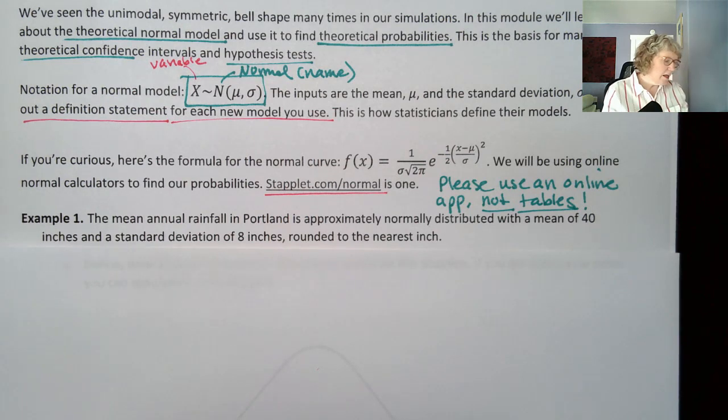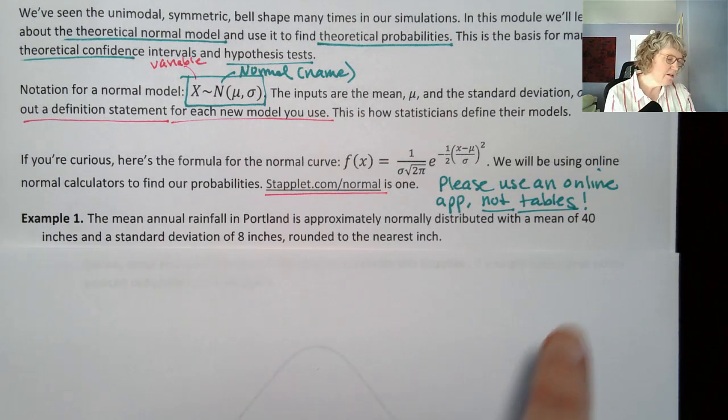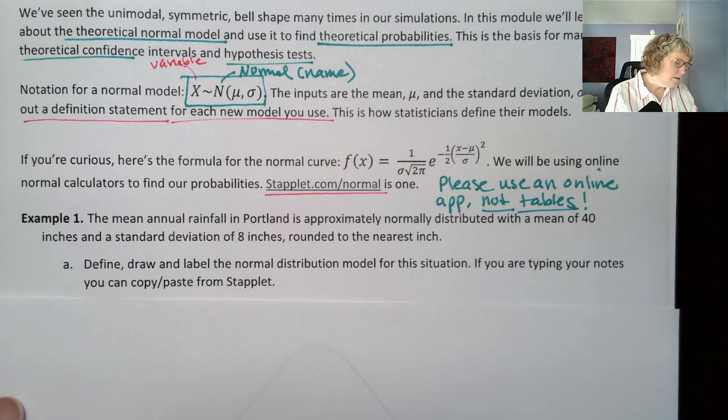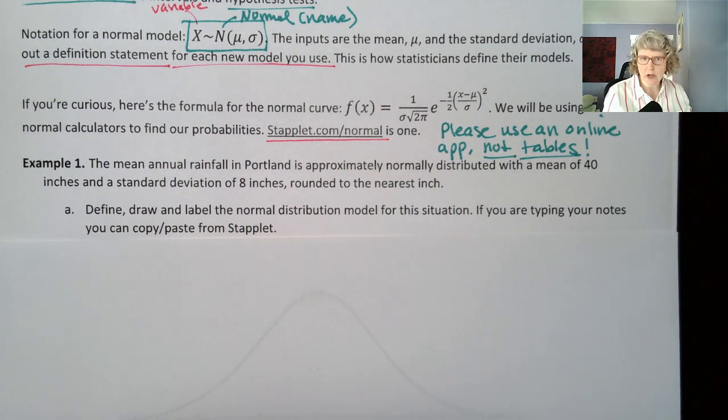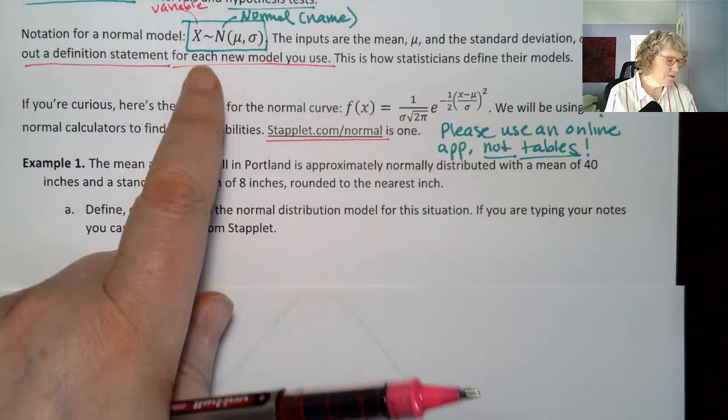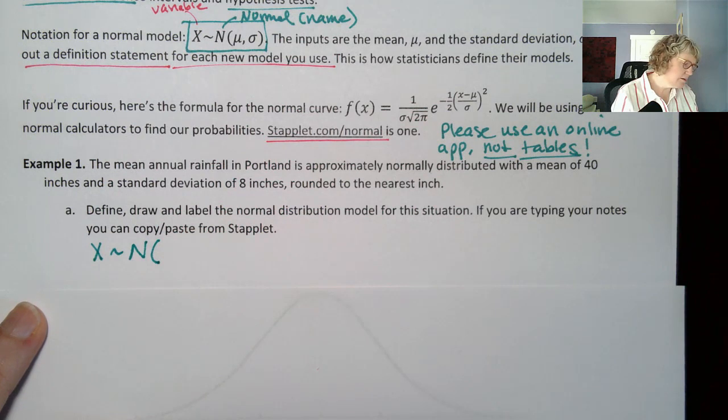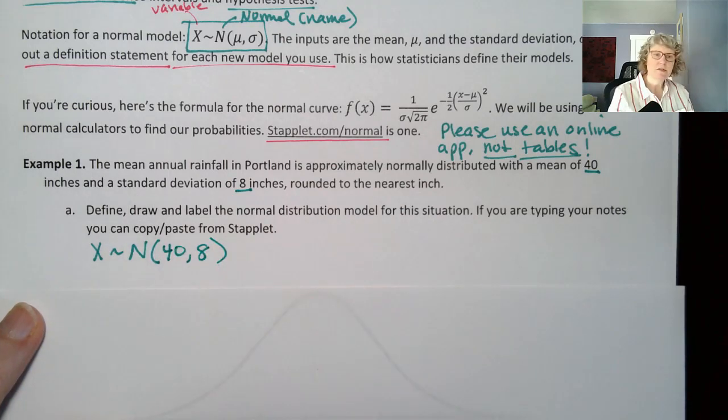So let's first see how we're defining this and then we'll go to staplet. Here's an example. The mean annual rainfall in Portland is approximately normally distributed with a mean of 40 inches and a standard deviation of eight inches. Round to the nearest inch. So I did look up the mean, it is about 40 inches. The standard deviation is an estimate. Here's a question you might see: Define, draw, and label the normal distribution model for this situation. So the define part, remember that's the green box. Let me write that out. X is distributed as normal with mean 40 and standard deviation 8.